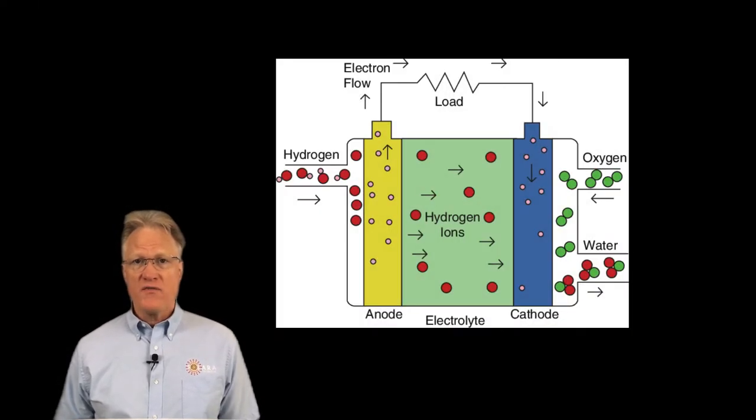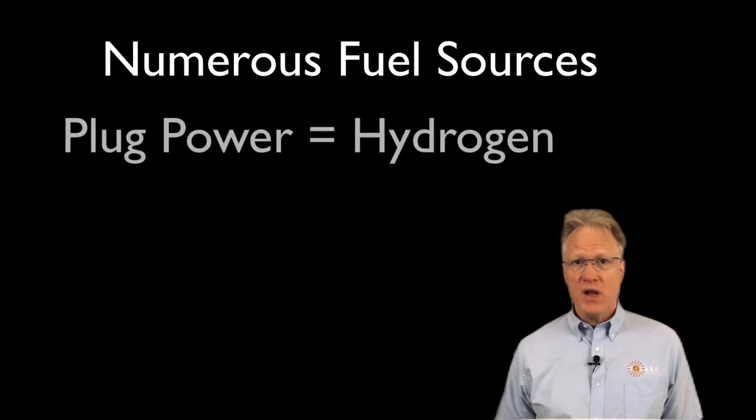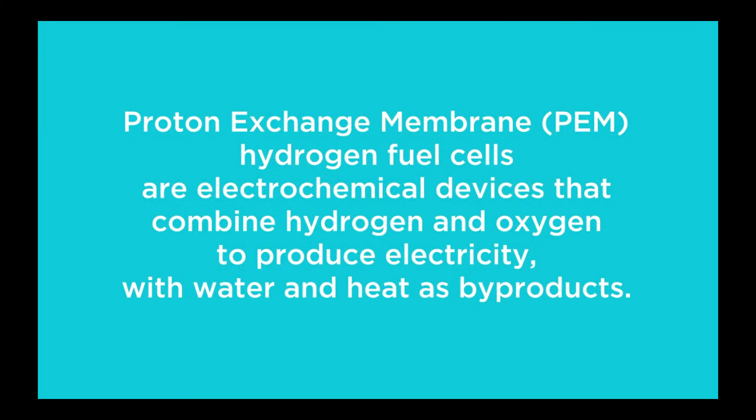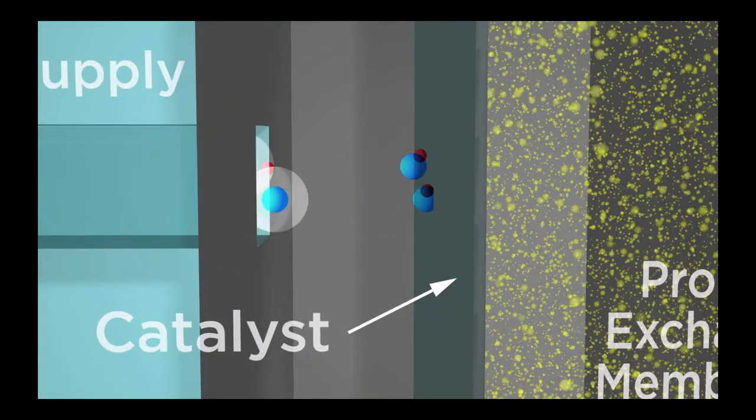The magical part of a fuel cell is something called the proton exchange membrane. This membrane strips off the electrons generating a DC voltage while allowing the protons to pass through to the other side, hence the name. Any number of fuel sources can be used to power a fuel cell. Plug Power uses hydrogen. In this animation, hydrogen is attracted to the membrane by the oxygen atoms on the other side, where electrons are stripped off and the protons pass through.